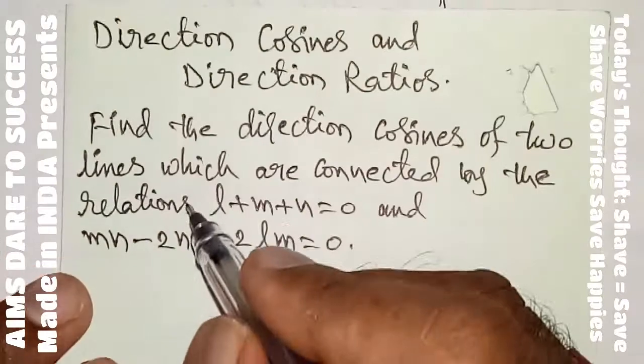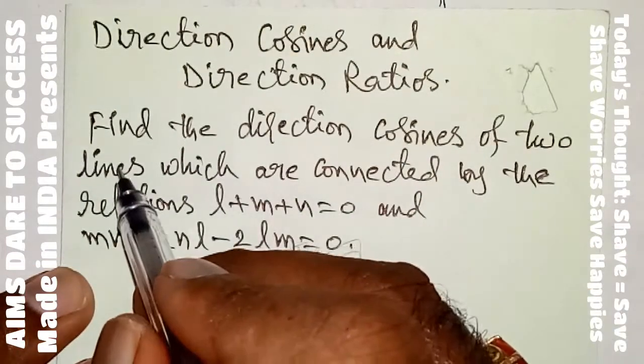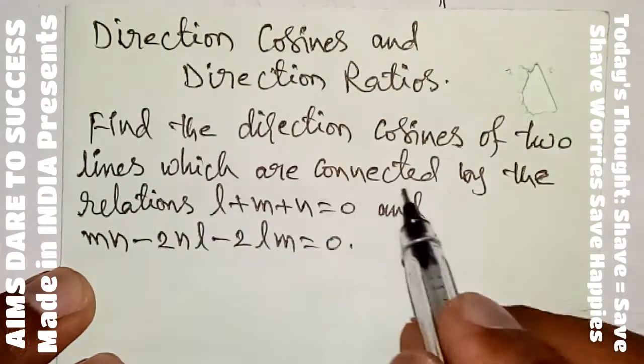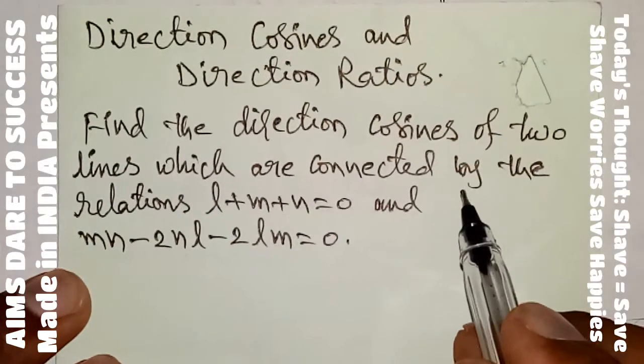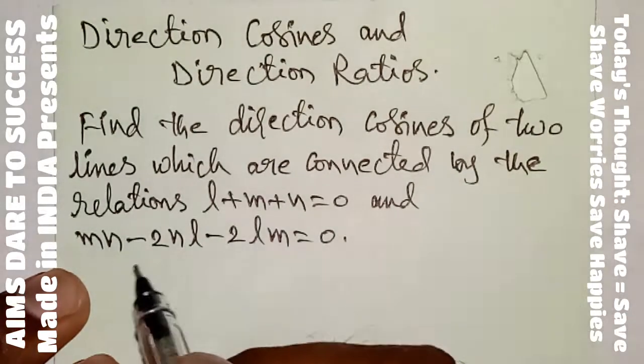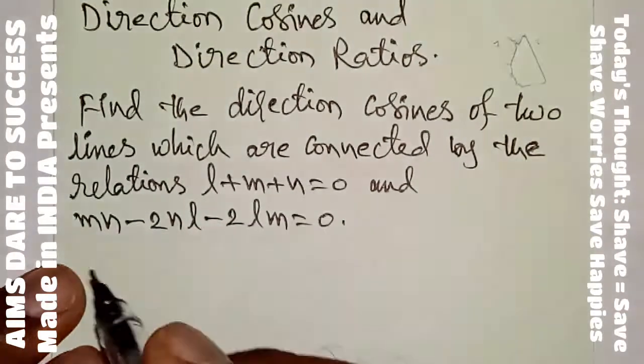Now I'm going to directly explain the question. Direction cosines and direction ratios — this chapter is very easy. Find the direction cosines of two lines which are connected by the relations l plus m plus n equals 0, and mn minus 2nl minus 2lm equals 0.